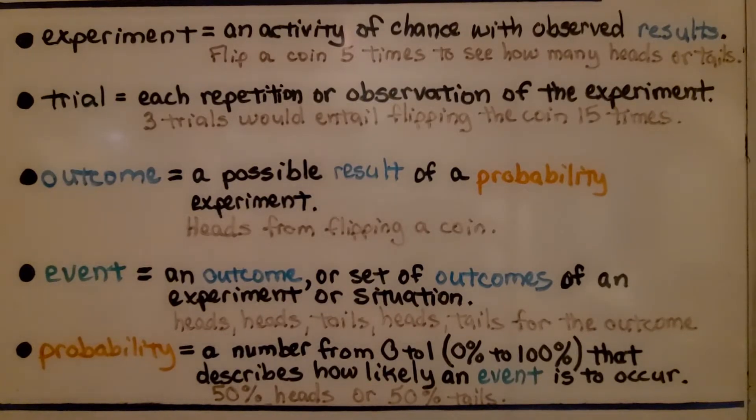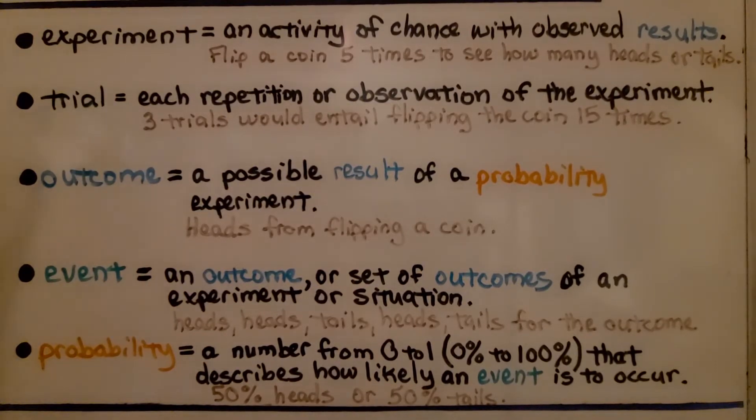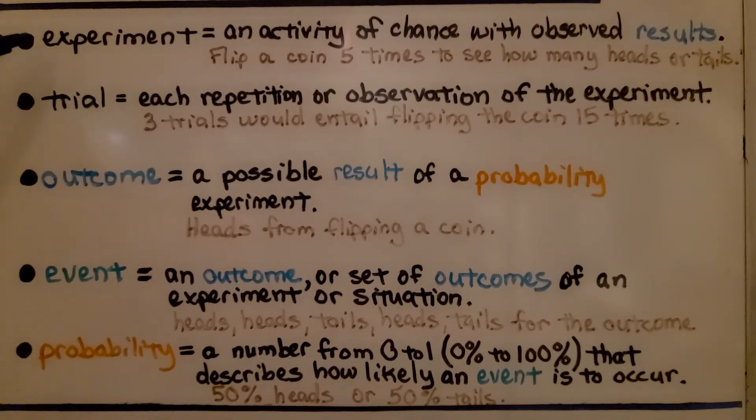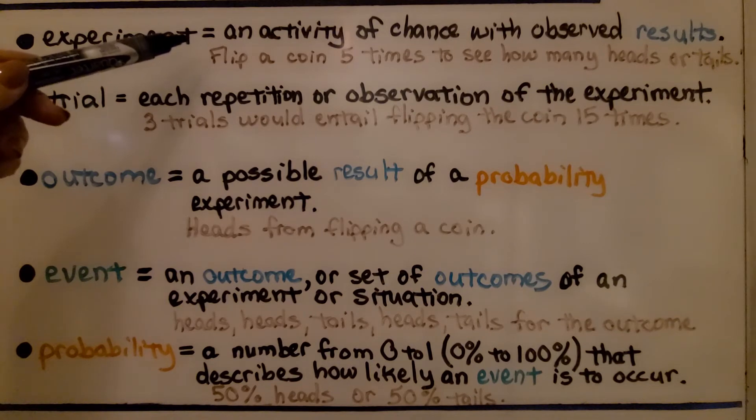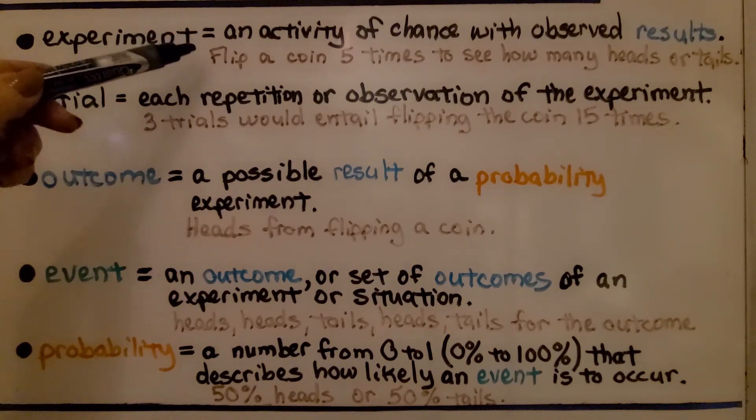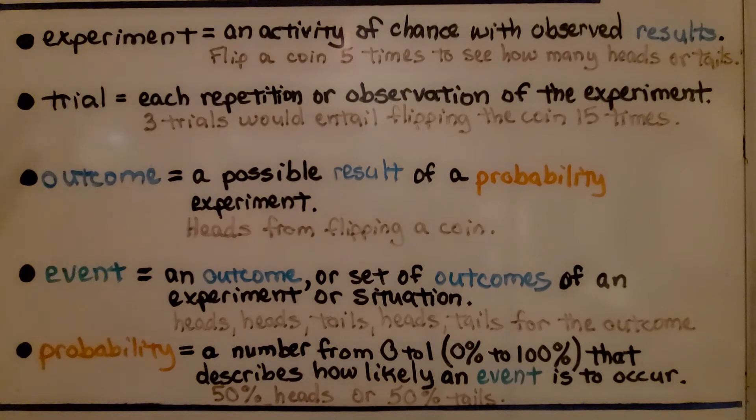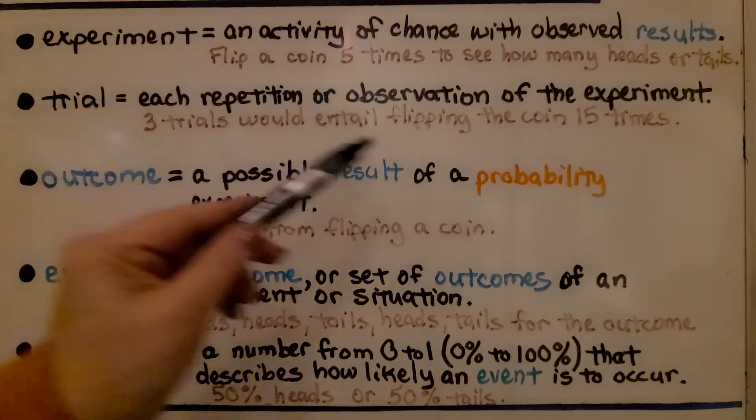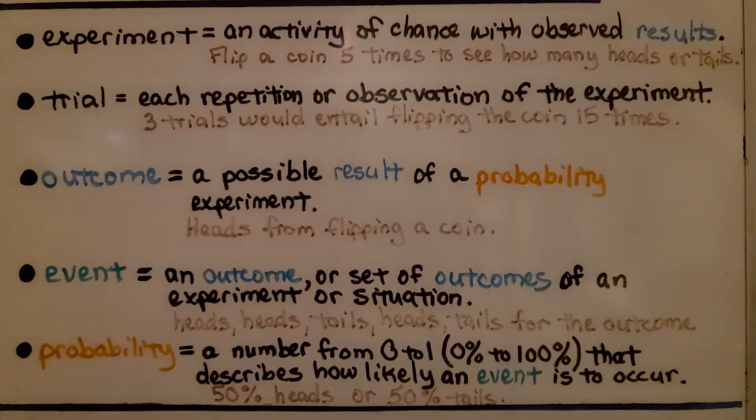This will give you some idea of the meaning of the words. An experiment is an activity of chance with observed results, like flipping a coin five times to see how many heads or tails we get. A trial would be each repetition or observation of the experiment. Three trials would mean flipping the coin 15 times, with each group of five being a trial.